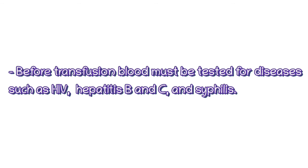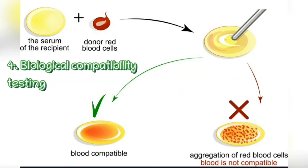It is forbidden to transfuse blood components without testing them for HIV, hepatitis B and C, and syphilis. For biological compatibility testing, two to three drops of the recipient's serum are placed on a plate and a small amount of erythrocytes is added at a ratio of one to ten. The erythrocytes are stirred with the serum and the plate is rocked gently for five minutes while observing the reaction. The presence of agglutination means the donor's blood is incompatible and should not be transfused; no agglutination indicates compatibility.